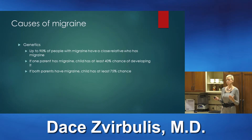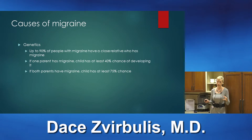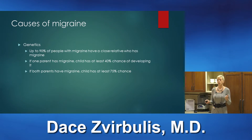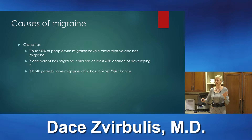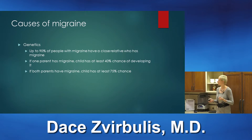There is a big genetic component to migraines. Up to 90% of people with migraines have a relative in their family with migraines. If one parent has migraines, the child has at least a 40% chance; if both parents have migraines, the child has a 75% chance. Some subtypes like hemiplegic migraine are caused by specific genes, but for the common varieties, it's a combination of multiple genes and environmental factors that predispose and cause migraine.